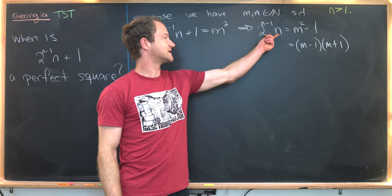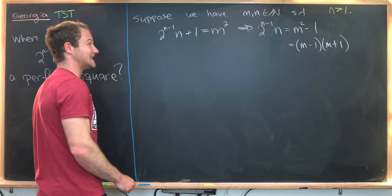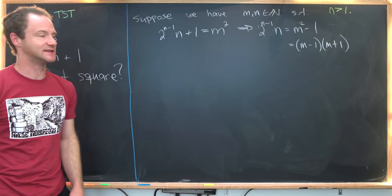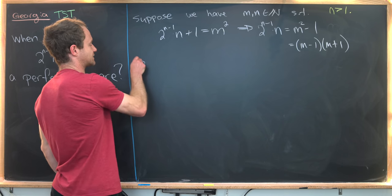But if n is bigger than 1, this left hand side is even. But if this left hand side is even, then this right hand side is also even. So let's write that down.